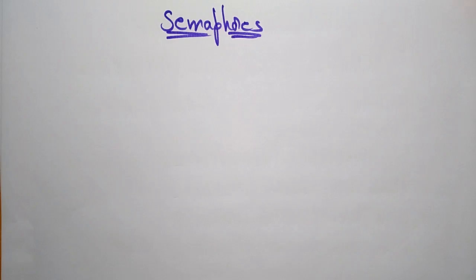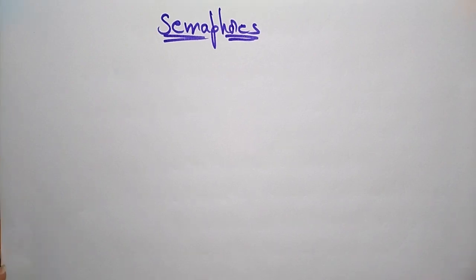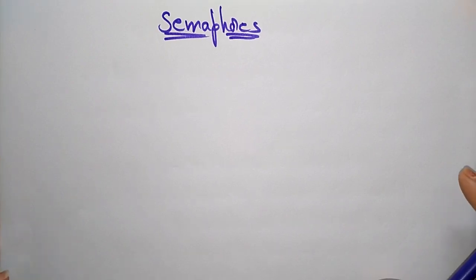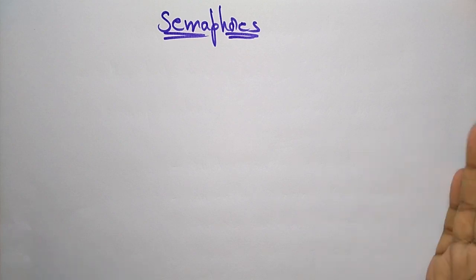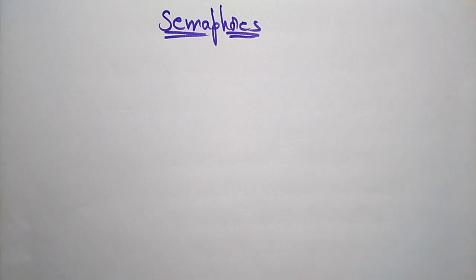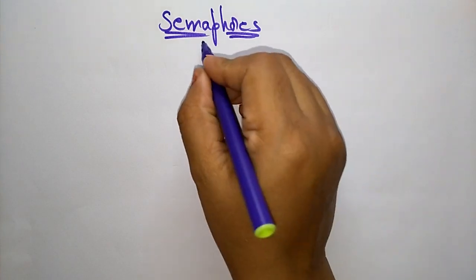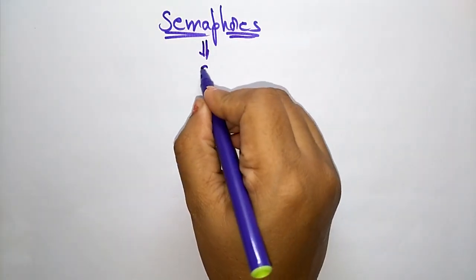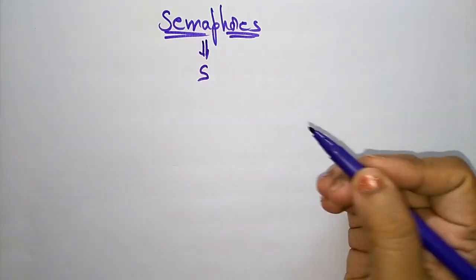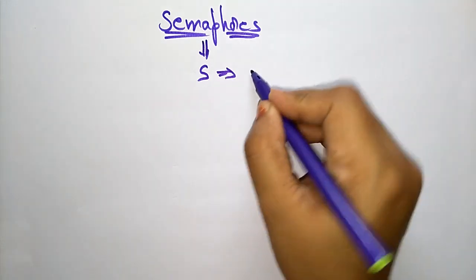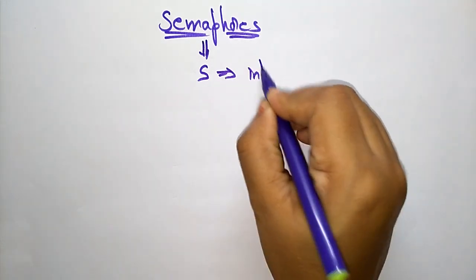Hi students, coming to the next topic in the subject operating system — semaphores. Semaphores is one of the important topics in operating systems. So now let us see what this is. Actually, a semaphore is nothing but an integer variable. A semaphore will be represented as the variable S. This is simply an integer variable.